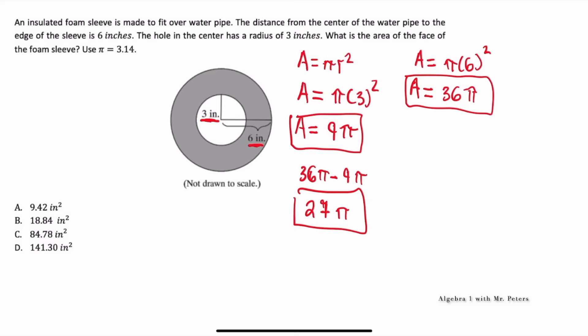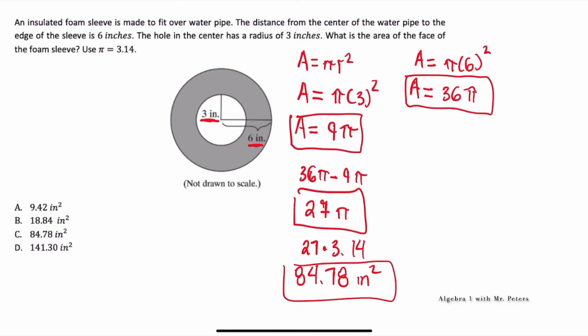Now, 27 pi is not yet one of the answer choices. We're going to have to take 27 and multiply by 3.14. Once we multiply, we get an answer of 84.78 inches squared. So our correct answer choice should be C. You can multiply by pi at the end, or you could do 9 times pi and 36 times pi and then subtract — you will get the same answer.